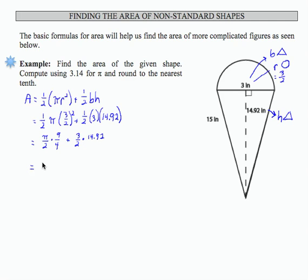If I continue, I'm going to substitute 3.14 for pi, and then that's going to be times 9. If I combine that with my fraction denominator, 2 times 4 is 8, plus 3 times 14.92 is 44.76 divided by 2.